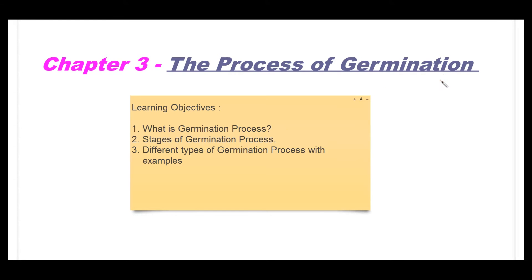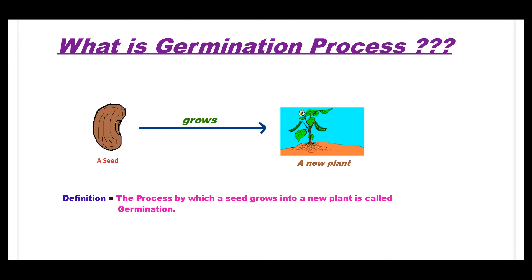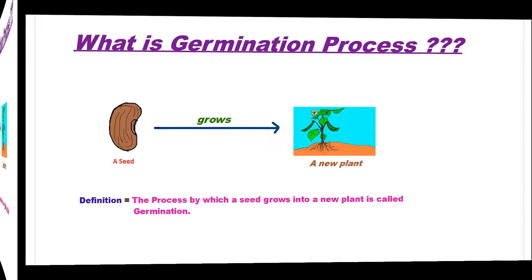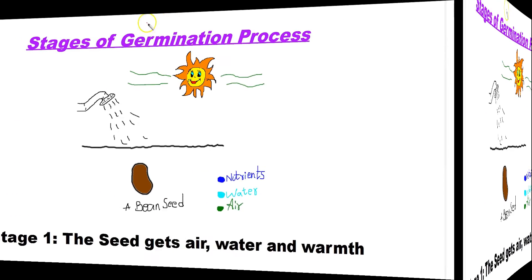The points I am going to discuss in this chapter are: What is the germination process? Stages of the germination process, and different types of germination process with examples. The process by which a seed grows into a new plant is called germination. So let's learn about the different stages of the germination process.